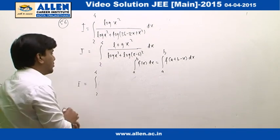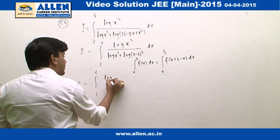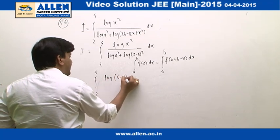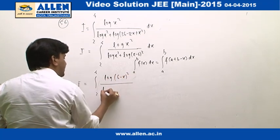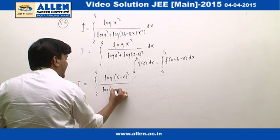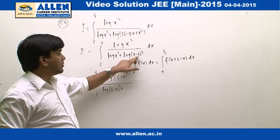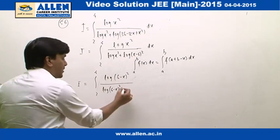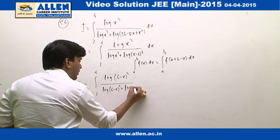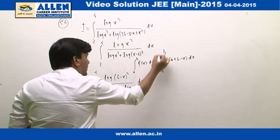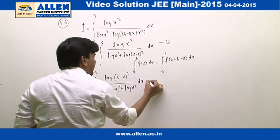After applying this property, this integral will become 2 to 4, and since we are evaluating a plus b that is 6 minus x, this will become log(6 - x) whole square upon log(6 - x) whole square plus log x square. We can assume this as equation 1 and this is equation 2.